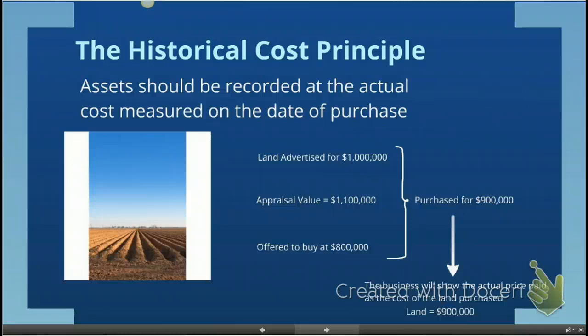In your books of accounting, the business will show the actual price — which is $900,000 — as the cost of the land that you purchased. To summarize, the historical cost principle says you record the cost of anything at the amount you paid for it. Not the advertised price, not the appraised price, but actually how much you paid for it.